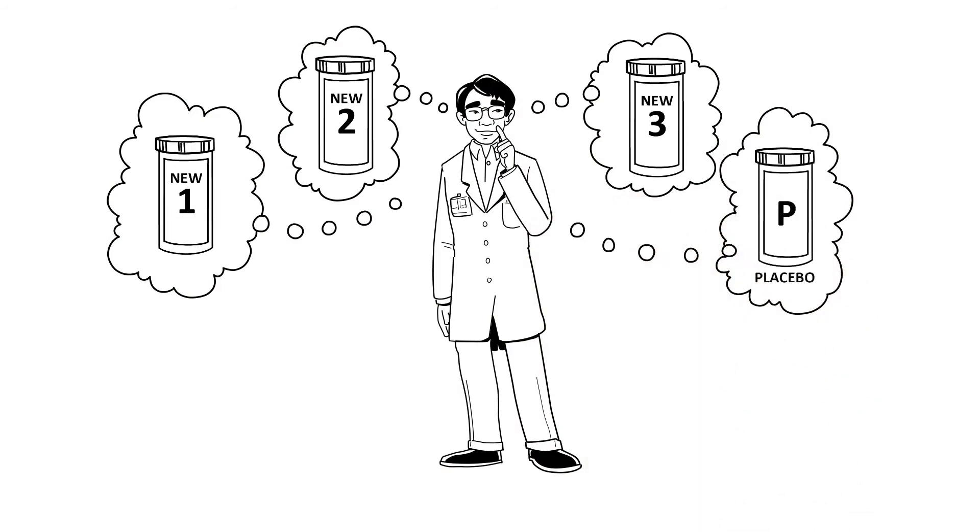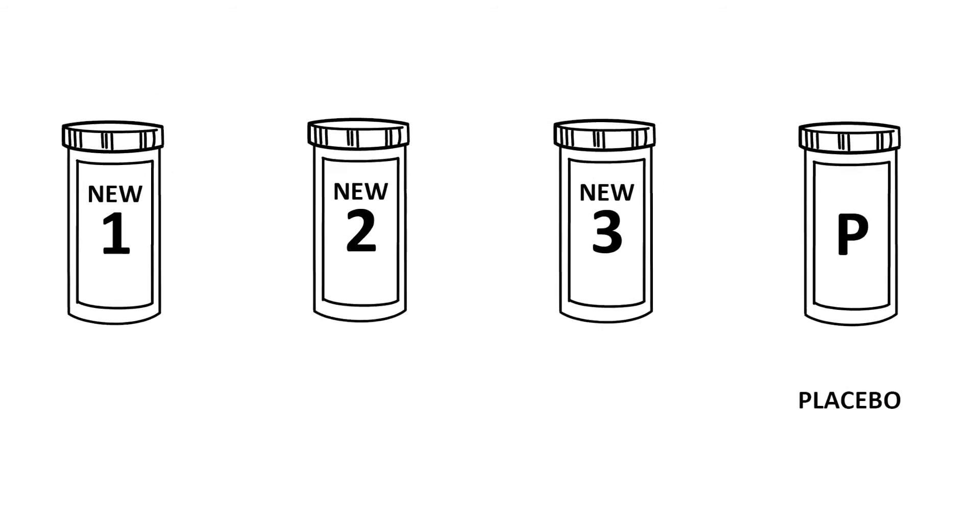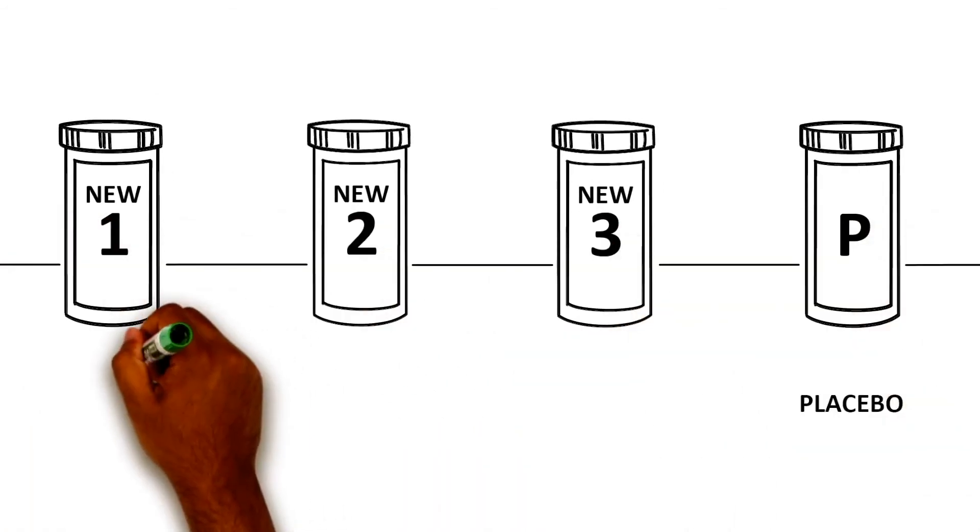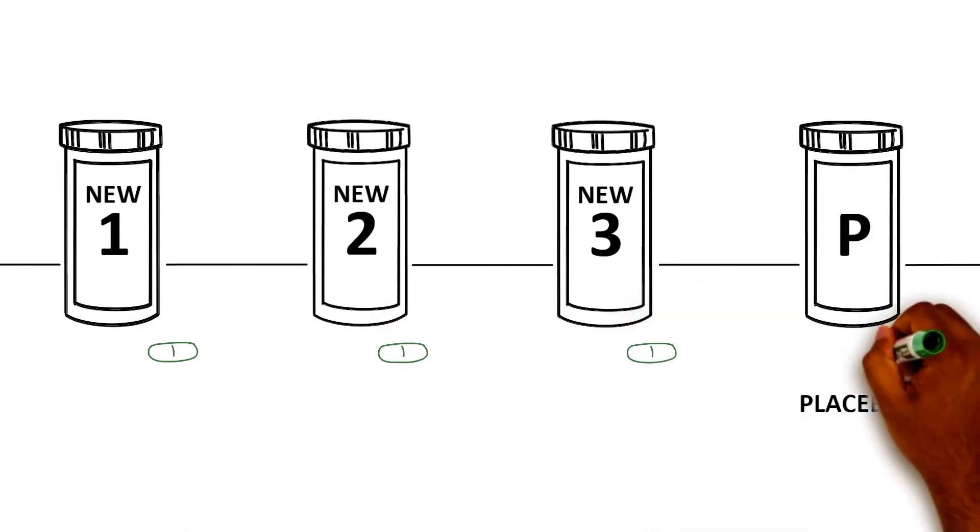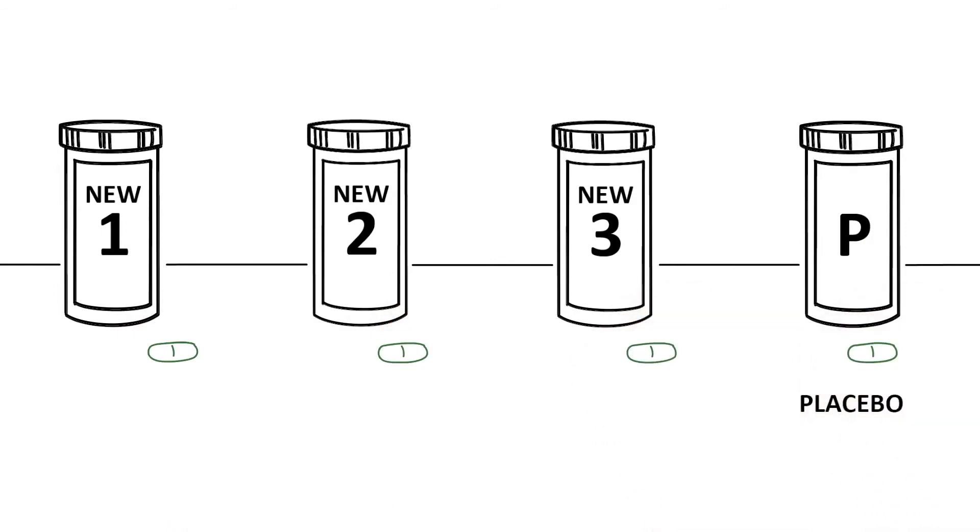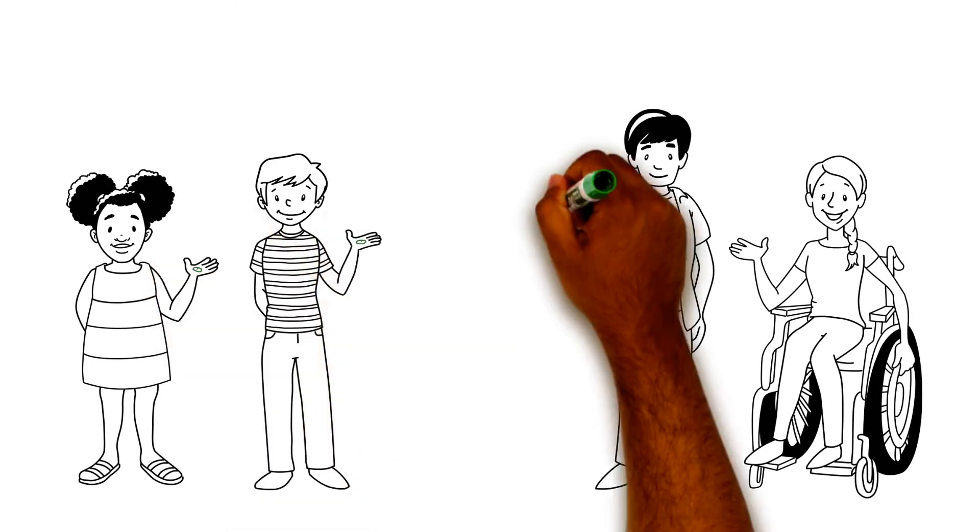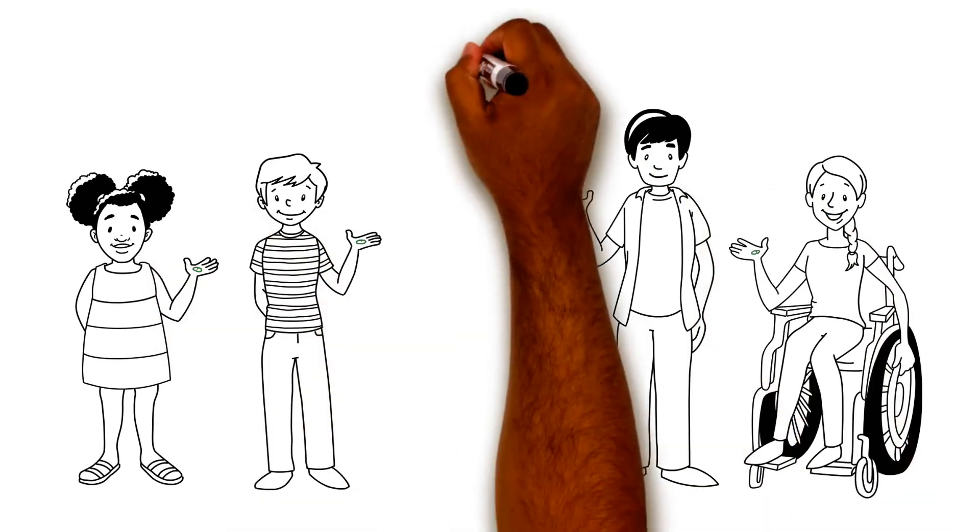Researchers do this using a placebo. A placebo is something that looks the same as the real treatments, but a placebo does not have any active ingredients. For example, it might look like a pill, but it would not have any medicine. The reason they look the same is so that neither the researcher nor the VIP know which treatment they are getting.